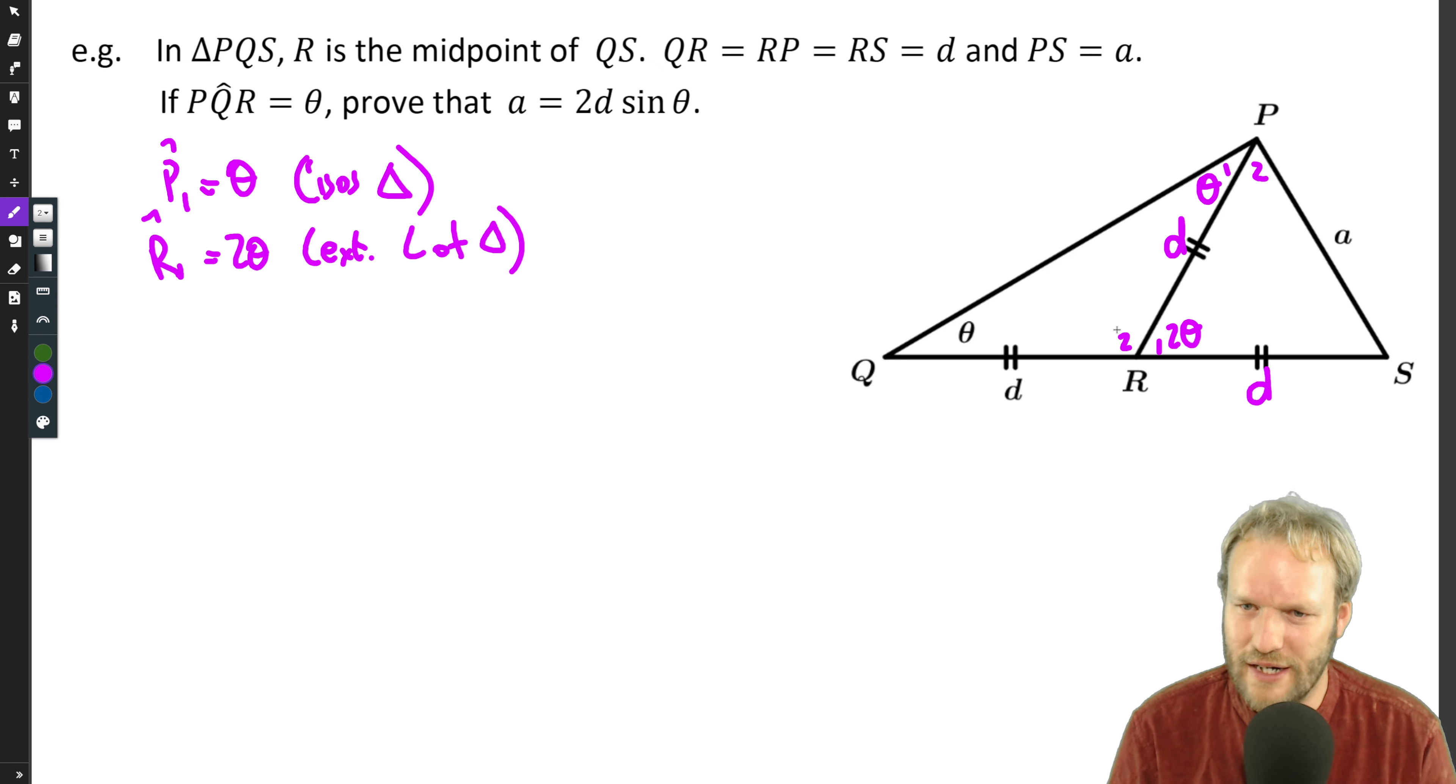So other things we might or might not need is this here is 180 minus 2 theta because angles in a straight line. Now I start thinking, what is the point of the question? We're writing down a lot of things here that are just geometry related that we're probably not going to need as well. So we must be careful about getting too distracted, but I'm just going to put them down here because they're interesting enough to remind ourselves of angles on straight line while we're doing this.